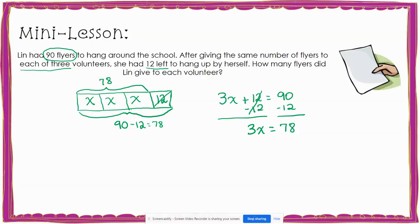This is the same as my tape diagram — I now have three x's that equal 78. Since each of these x's is the same amount and there are three of them, I'm going to divide 78 by 3, which gives me 26. I can show this in my equation by dividing by 3 on both sides. The 3's cancel, leaving x equals 78 divided by 3, which is 26. So my solution is x equals 26.